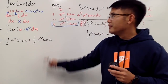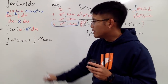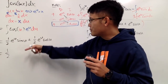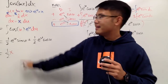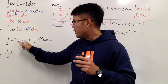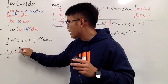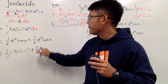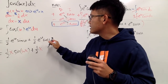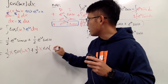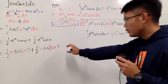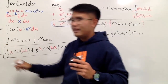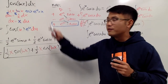Now we just have to go back to the x world. One-half stays as one-half. e to the u is x. Sine u becomes sine of ln x. For the second term, one-half, e to the u is x, and cosine u becomes cosine of ln x. Finally, we attach plus c. That is the integral for the original.